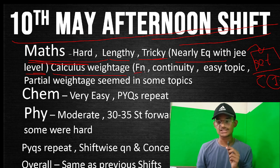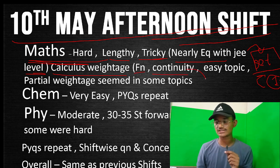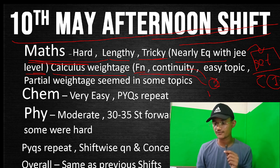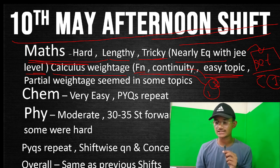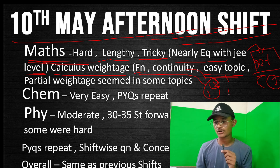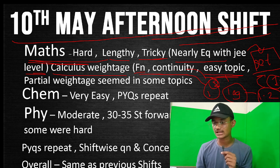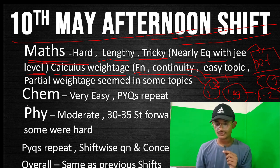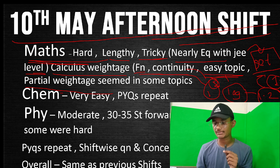Function and continuity had higher weightage — I guess 1-2 questions each. Logic is also a core and easy topic, with around 1-2 questions. Matrix also had 1-2 questions. The partial weightage distribution in this paper shows how much each topic contributed.